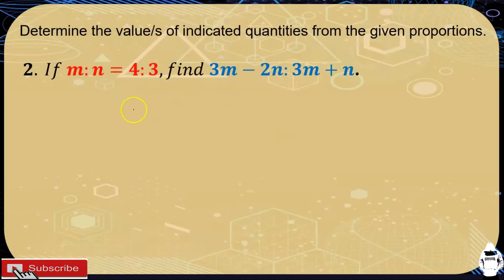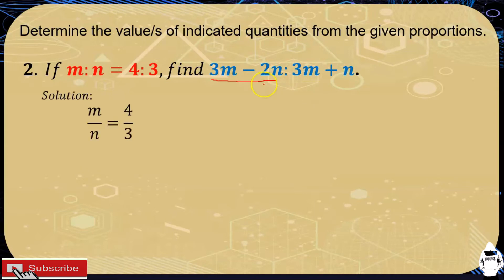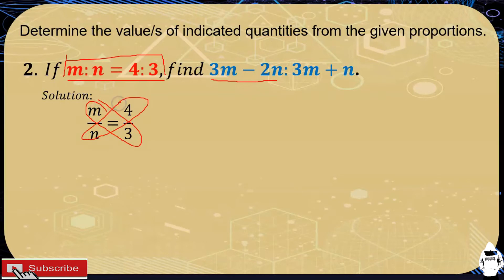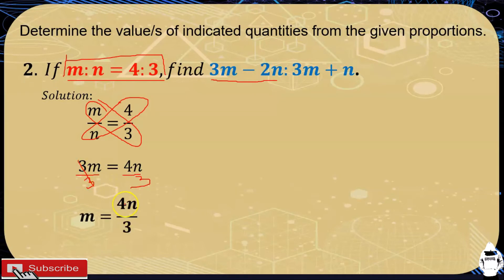Let's have another example. If m is to n is equal to 4 is to 3, find 3m minus 2n is to 3m plus n. We write it in fraction form so m over n is equal to 4 over 3. Using the cross multiplication property, we have 3m equals 4n. To solve for m, we divide both sides by 3, so m is equal to 4n over 3.